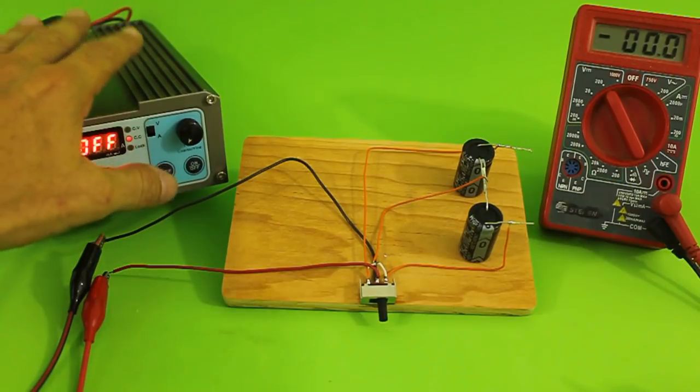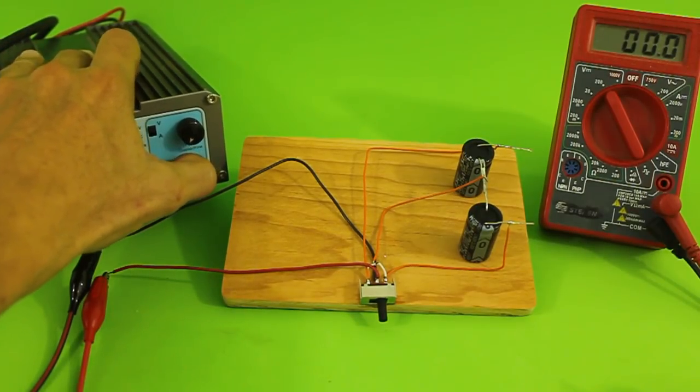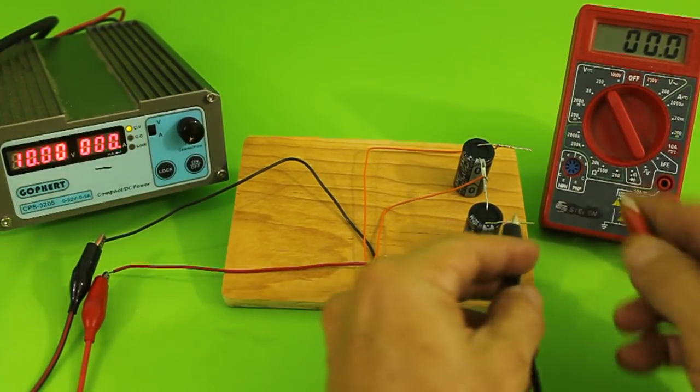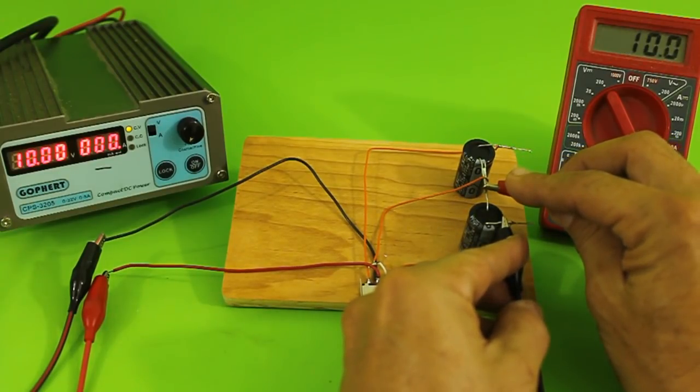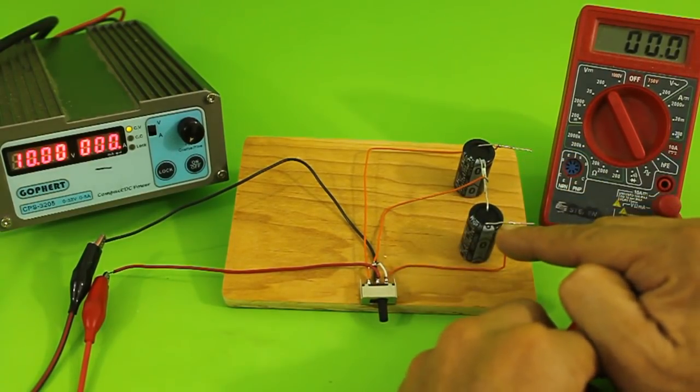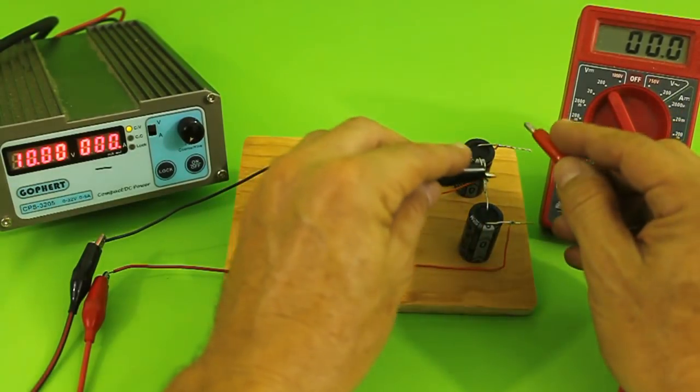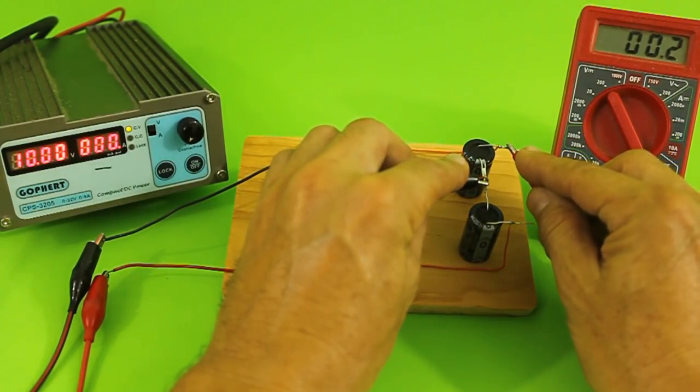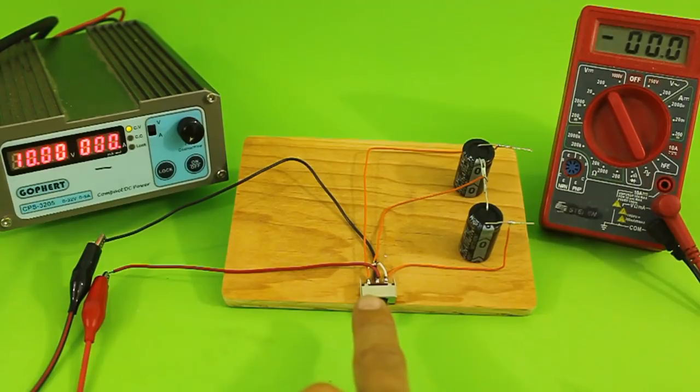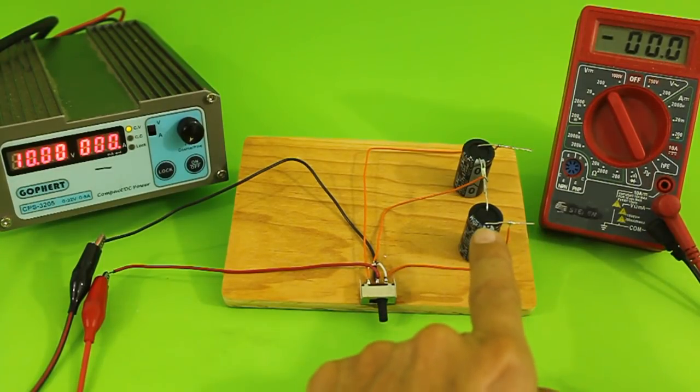Now, I am going to turn on the power supply. And let's see. Here we have 10 volts. This capacitor is now charged, and this is discharged, because the switch is in the position that charges this capacitor.